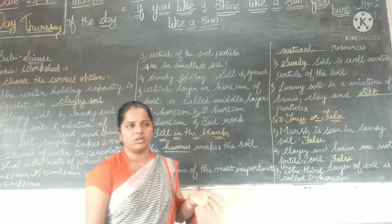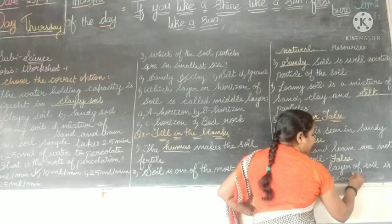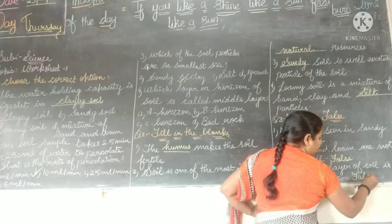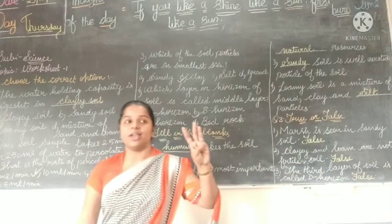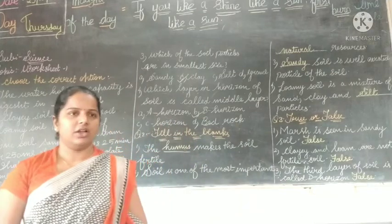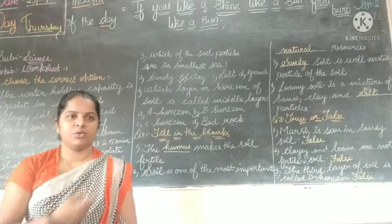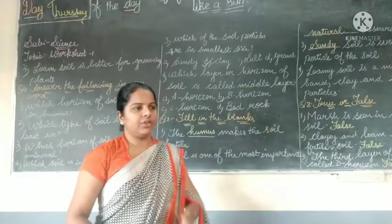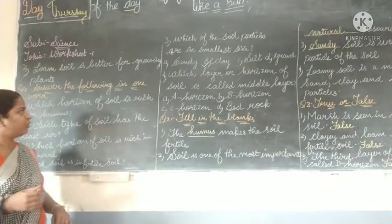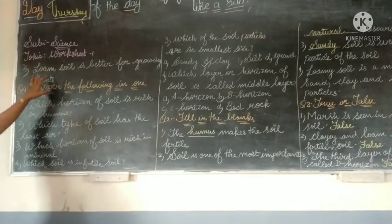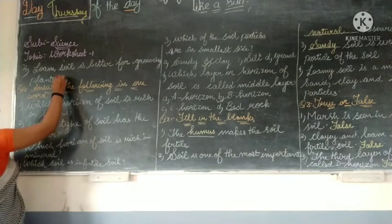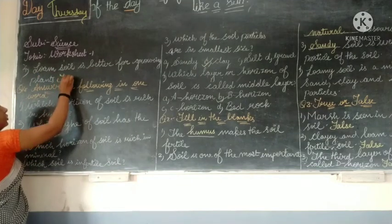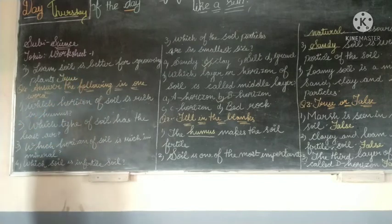The third layer of the soil is called the C horizon. Understood, students? Yes. Continue with true or false: last question — loamy soil is better for growing plants, true or false? True. Very good.